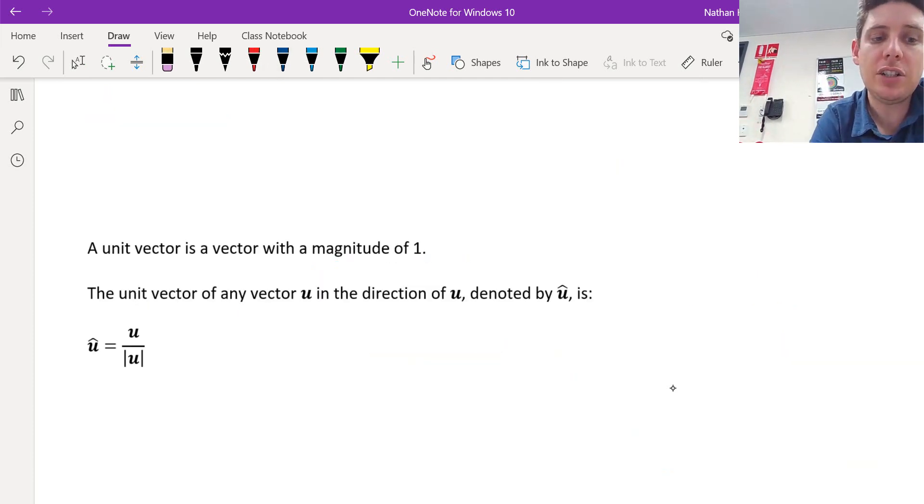We can also change a vector into a unit vector. A unit vector is denoted by a little hat on top. So we often write i with a little hat like that, j with a little hat. And these represent unit vectors in the x direction and the y direction. To convert a vector into a unit vector, we just divide that vector by the magnitude.